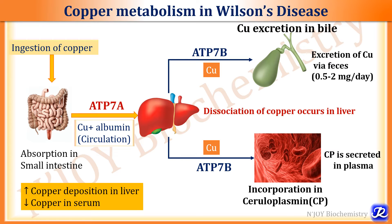In normal copper metabolism, after ingestion copper is absorbed in the duodenum and with the help of ATP7A comes into circulation, is bound to albumin, and taken up by hepatocytes. In the hepatocytes, ATP7B is responsible for excretion of copper in bile and incorporation into ceruloplasmin. But if the ATP7B gene is mutated, copper will not be excreted in the bile and will not get incorporated into ceruloplasmin, resulting in decreased ceruloplasmin levels and decreased serum copper. This is the pathophysiology of Wilson's disease.